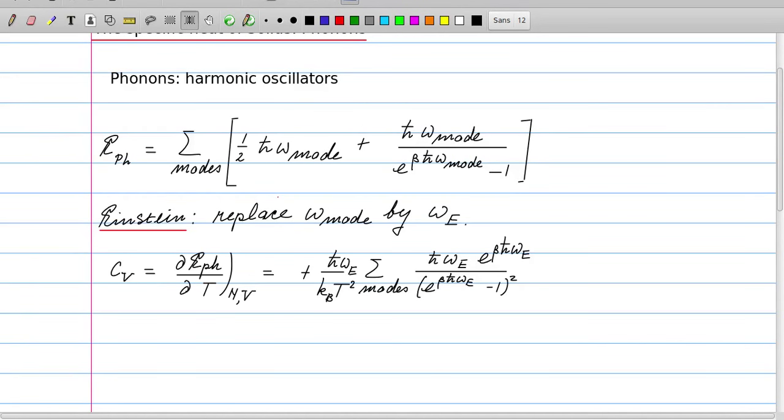Einstein made the simple approximation to replace the mode frequency by a single mode frequency omega_e, which means that every atom in the solid is vibrating at the same frequency. Then we can calculate the specific heat.